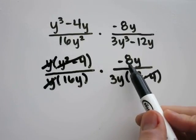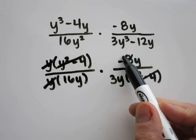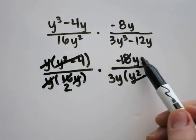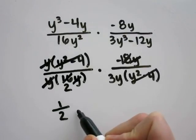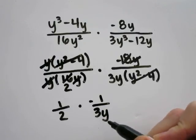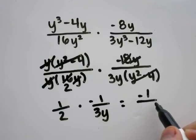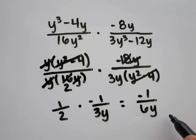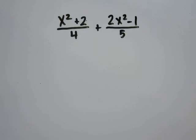16 and 8 are both divisible by 8. 8 divided by 8 is 1, and 16 divided by 8 is 2. You can also cancel out the y's. Rewriting what you're left with: here it's 1 over 2, and negative 1 over 3y. 1 times negative 1 is negative 1, 2 times 3 is 6, keep the y. So you're left with negative 1 over 6y, which is the same as letter A.